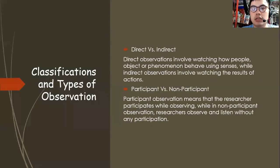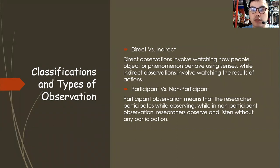Here are the classifications and types of observation. When we say direct versus indirect: direct involves watching how people, objects, or phenomena behave using the senses, while indirect observation involves watching the results of an action. Direct observations deal with live scenes, while indirect observations deal with the finished products, results, or outputs.